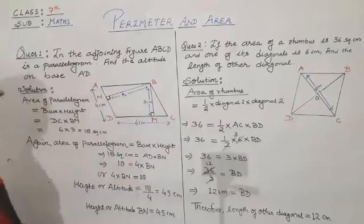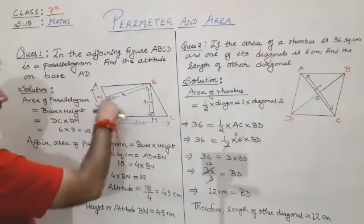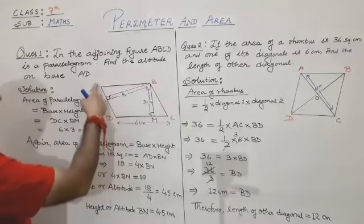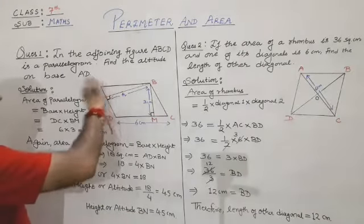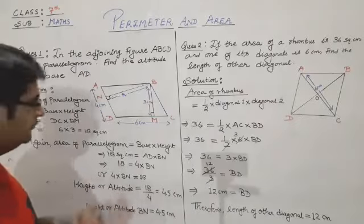Now we have to calculate this height BN, which is perpendicular to base AD, and AD is given as 4 centimeters.